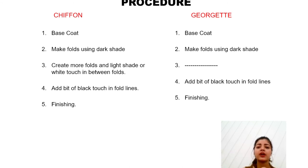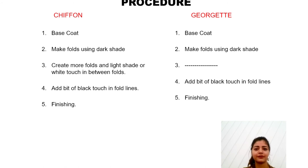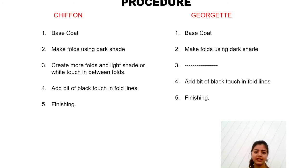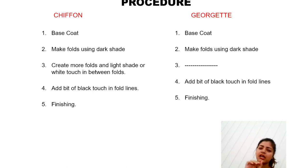While rendering folds in chiffon, we add a little light color in the back, but in georgette this step is missing, which is why georgette looks dull and quite rough. Then comes the fourth step: add a bit of black touch in the fold lines. In georgette this is quite similar. We always show a shadow in the fold area — shadows fall in the fold area. For that, we add just a bit of black touch, not a lot.